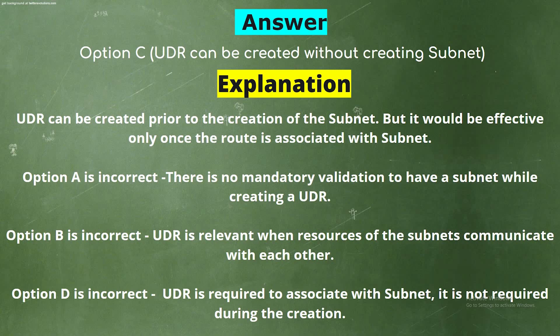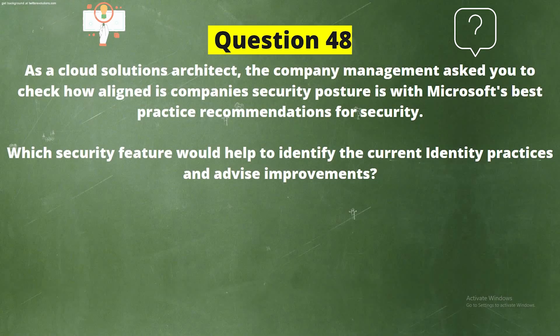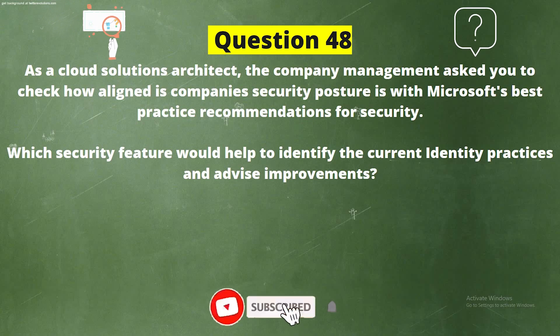Option A is incorrect — there is no mandatory validation to have a subnet while creating a UDR. Option B is incorrect — UDR is relevant when resources of the subnets communicate with each other. Option D is incorrect — UDR is required to associate with a subnet; it is not required during the creation.